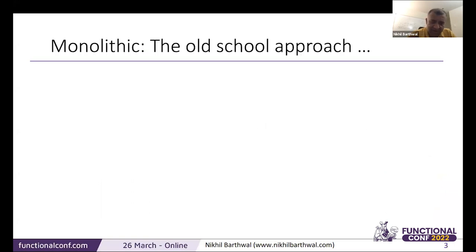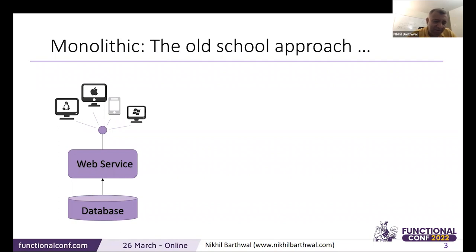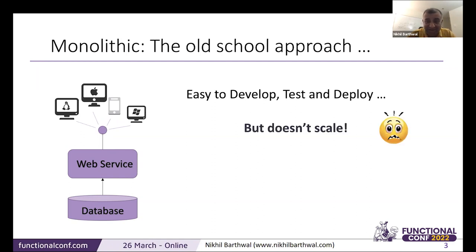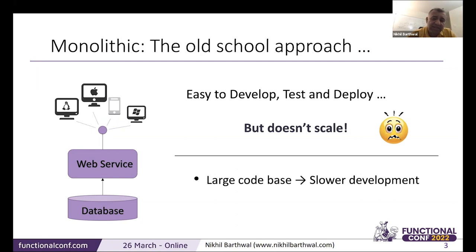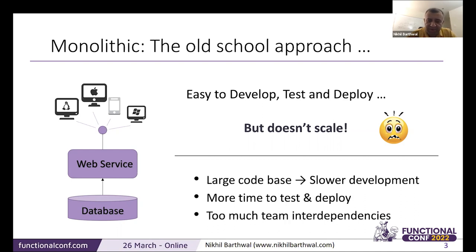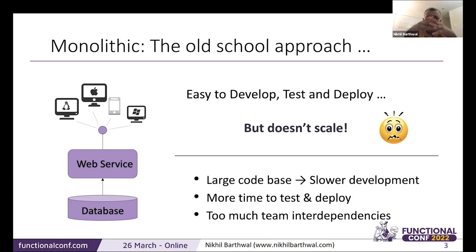Before I start, I'll go back a little to monolithic architecture — the old-school approach. We have a simple web service connected to a database with multiple clients. Everything is easy to test and deploy, but it doesn't scale. With a large codebase, development gets slower, testing takes more time, and there are many team interdependencies. If team one has to deploy but team two is not ready, it has to wait. In a large organization, monolithic models don't really work — and that's why we come back to microservices.